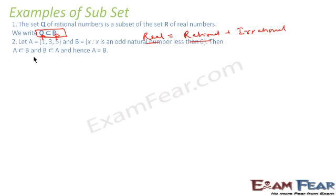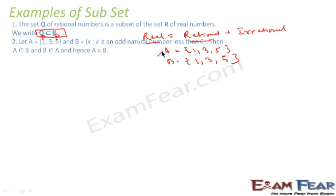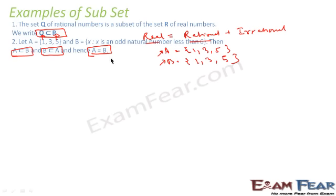Another example: A = {1, 3, 5} and B = odd natural numbers less than 6, so B = {1, 3, 5}. A is a subset of B because all elements of A are in B, and B is also a subset of A because all elements of B are in A. When A ⊆ B and B ⊆ A are both true simultaneously, we say A is equal to B. Please remember this formula.